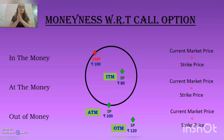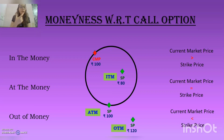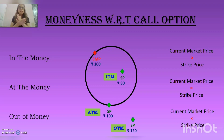To make things clearer: the current market price is the price prevailing right now in the market, which keeps fluctuating. The strike price, on the other hand, is the price at which we have purchased the option — that is, the price at which we would want to exercise the option.